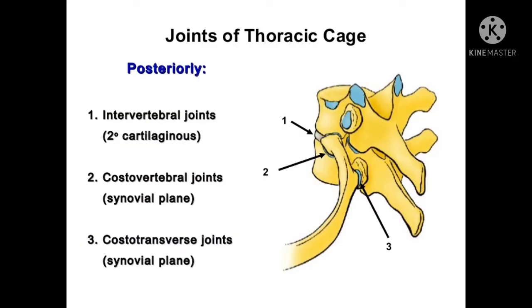On the posterior aspect, the intervertebral joints are called secondary cartilaginous joints. The costovertebral joints are called synovial joints, plane variety. The costotransverse joints are synovial joints, plane variety.